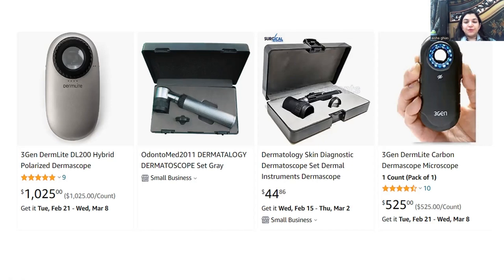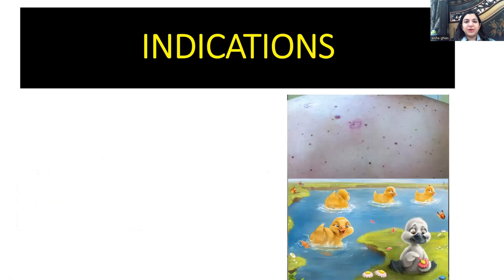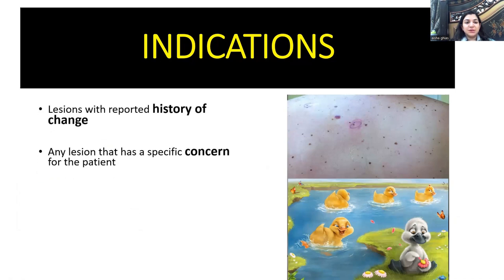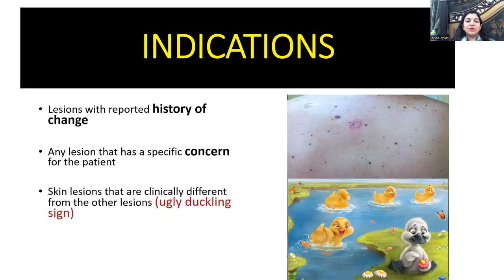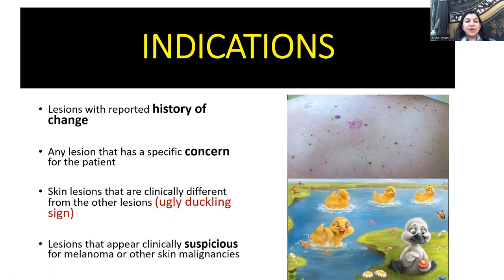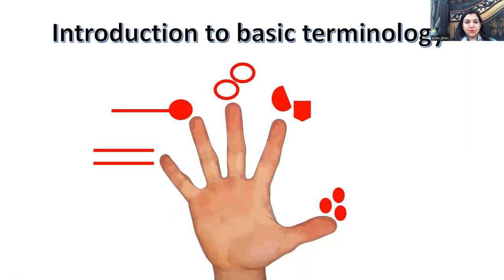Those going to the American Academy may buy one there; we'll try to make it available in Pakistan. The indications for dermoscopy: you don't need to examine every lesion. Use it when a lesion is concerning, has a history of change, seems uglier than the rest — the ugly duckling sign — or when the patient reports it is changing in color, shape, or giving symptoms.